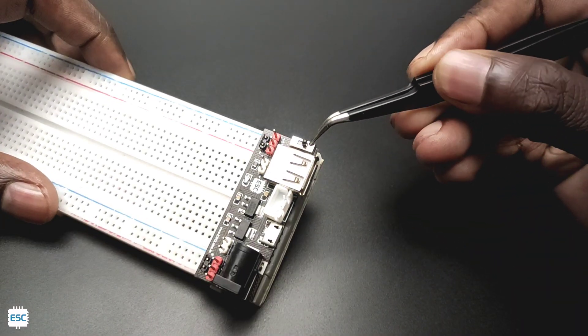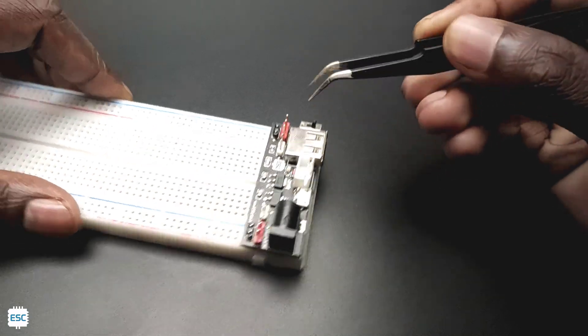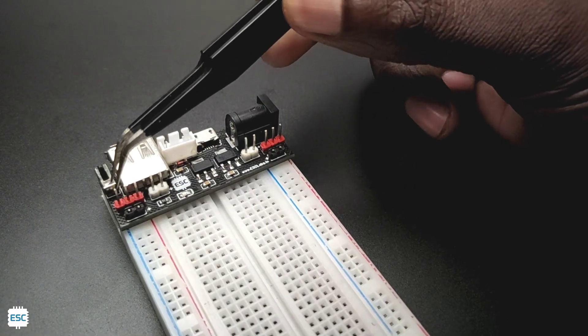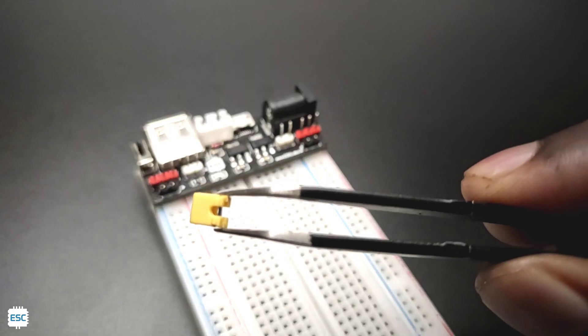We can use this switch to turn on and off the supply. On the two sides, you can see three header pins. Here we can select the voltage by using the jumper connector.